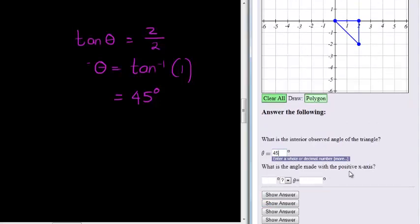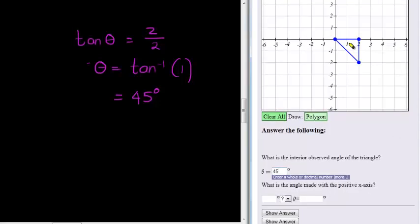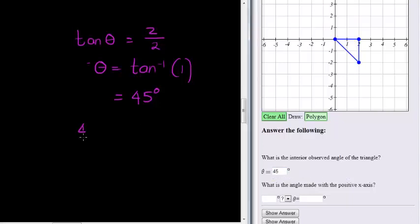Now the next question: what is the angle made with the positive x-axis? So what angle are we making with the positive x-axis now? There's two ways of looking at it. Either you can go from the positive x-axis and say, well, we're going in the negative direction.